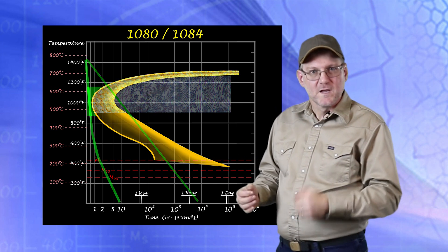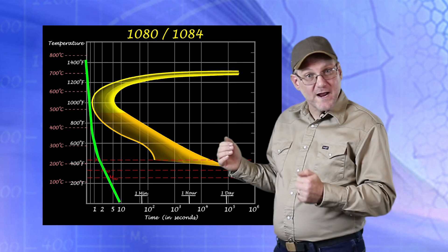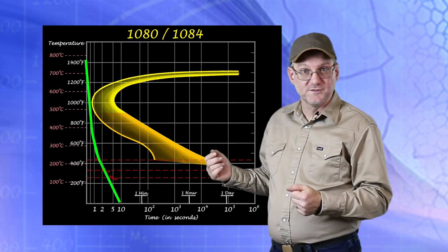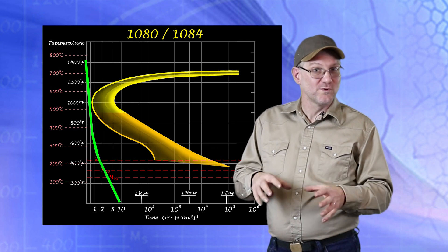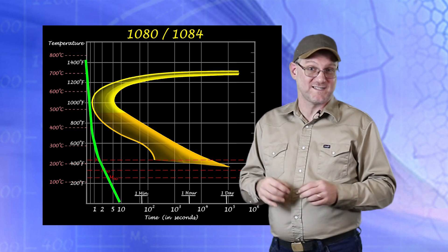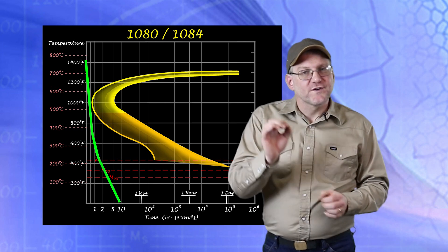But if we want hard steel, we want to do the opposite. By cooling fast enough to outpace diffusion, we can trap the carbon in the austenite solution and create a very different situation where the cooling steel is still austenitic well below the A1 temperature.